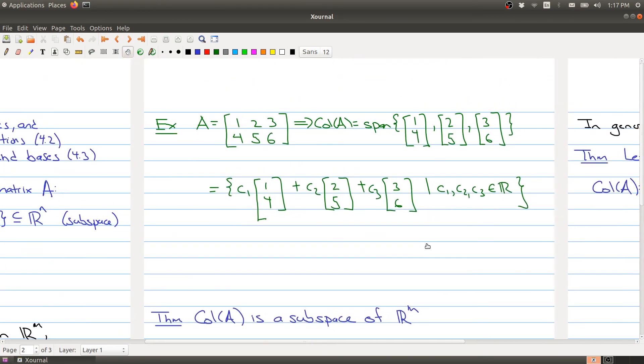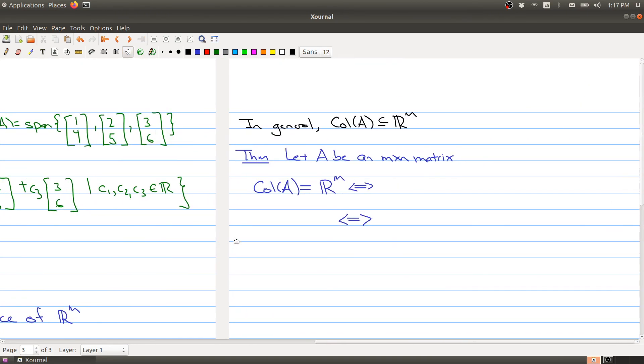Now, as mentioned, the column space is a subspace of R M because each of the columns are vectors in R M because we have M rows. So we have this containment. So remember, this symbol here means that this is a subset of R N or it could be equal. So it's always, of course, interesting to know when you have equality. And so when does the column space equal R M?